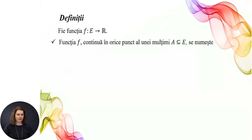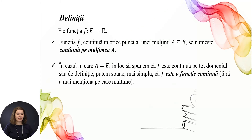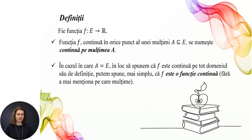Definiții. Fie funcția f din E în R. Funcția f continuă în orice punct al unei mulțimi A din E se numește continuă pe mulțimea A. În cazul în care A este egală cu E, în loc să spunem că f este continuă pe tot domeniul său de definiție, putem spune mai simplu că f este o funcție continuă, fără a mai menționa pe care mulțime.